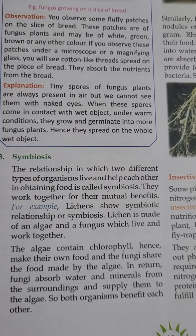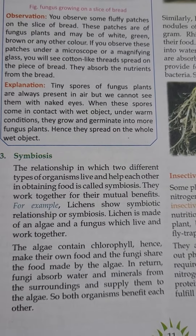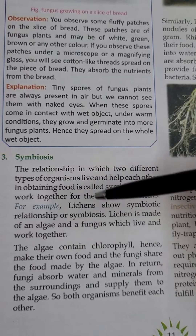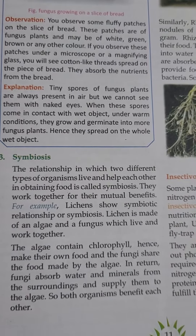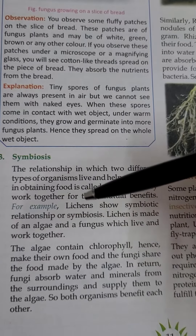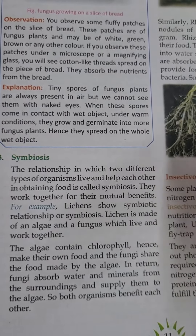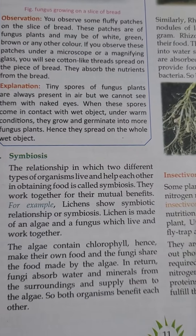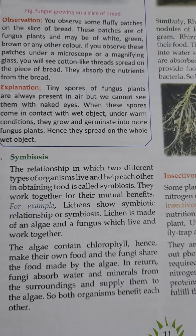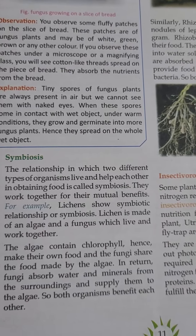In obtaining food. The example of lichen and fungus is very important — they are in a symbiotic relationship. Lichen is an example of algae, so it has chlorophyll and it can prepare its own food, but it is unable to trap or absorb water and minerals from its surroundings.